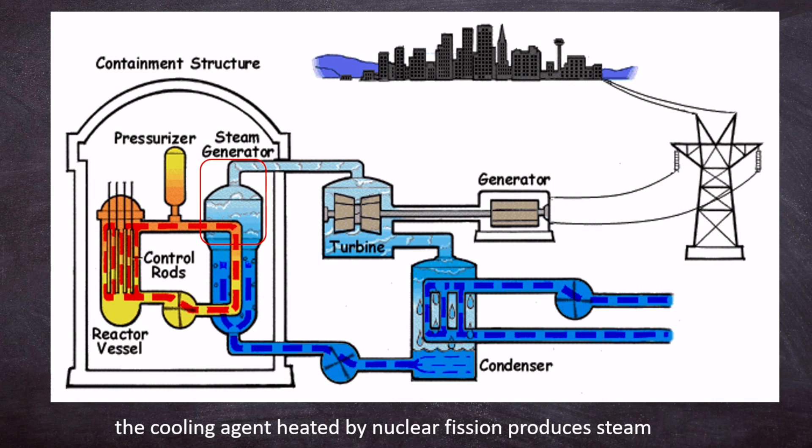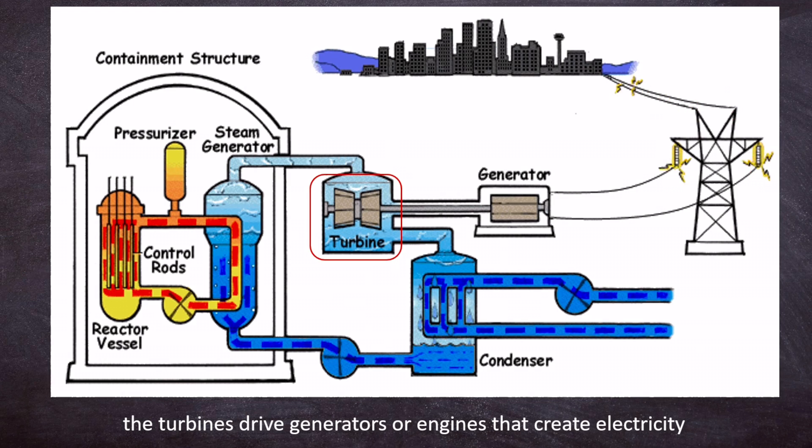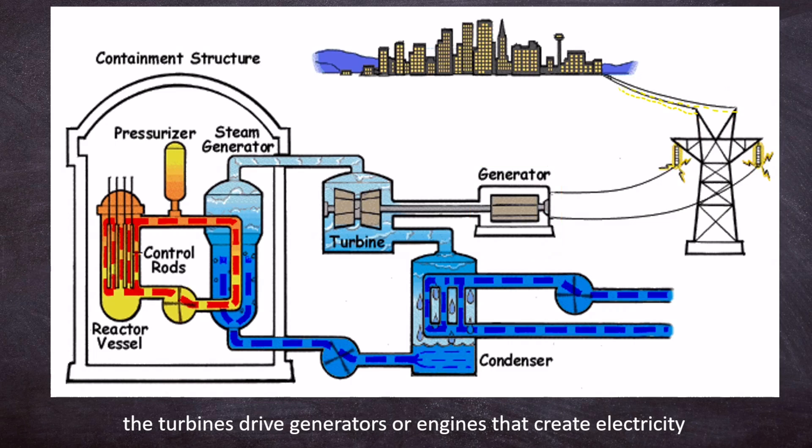The cooling agent, heated by nuclear fission, produces steam. The steam turns turbines. The turbines drive generators or engines that create electricity.